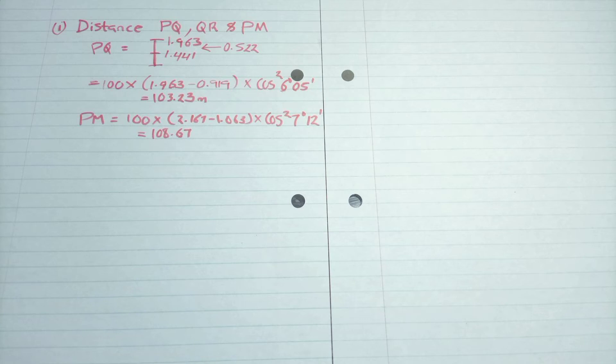Then you minus the difference also to the middle one. Then we find for Q-R too, so that is 100 times the difference, so that is S, the difference in the stadia readings. Then times the cos angle, then our answer is squared to find what we are looking for.